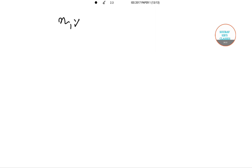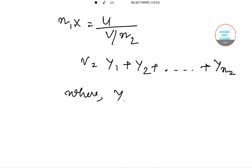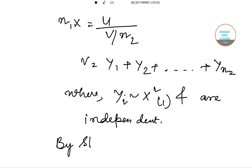Here, n1·X = U/(V/n2) where V = Y1 + Y2 + ... + Yn2, where Yi follows chi-square distribution and are independent. By strong law of large numbers...